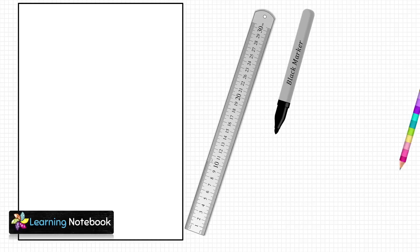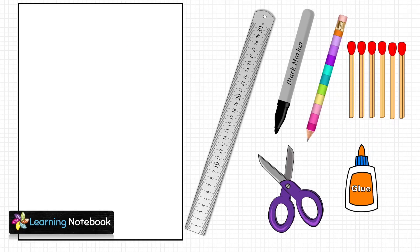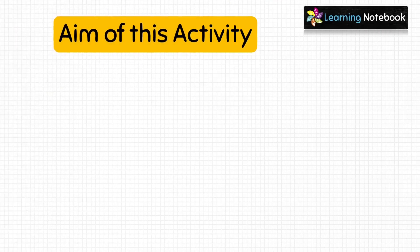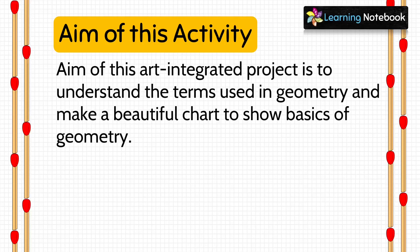For this activity we need a white chart paper, a ruler, a black marker pen, a pencil, a pair of scissors, a bottle of glue, and two or three match boxes. The aim of this art integrated project is to understand the terms used in geometry and make a beautiful chart to show the basics of geometry.